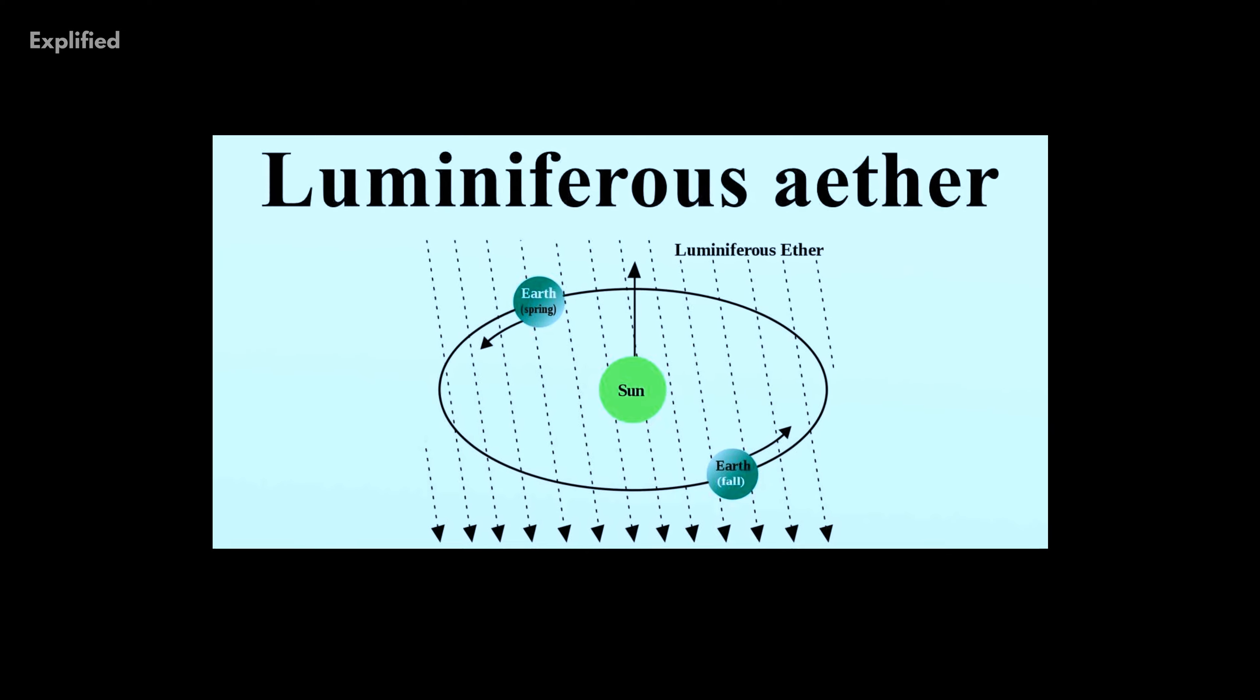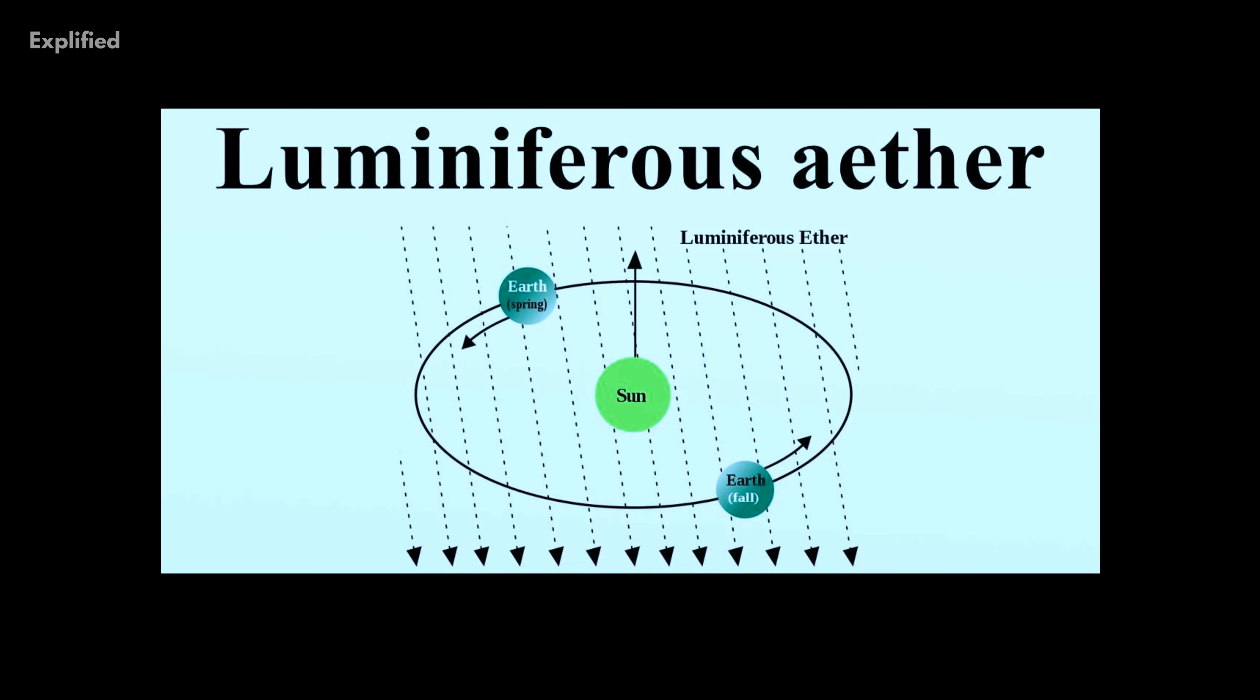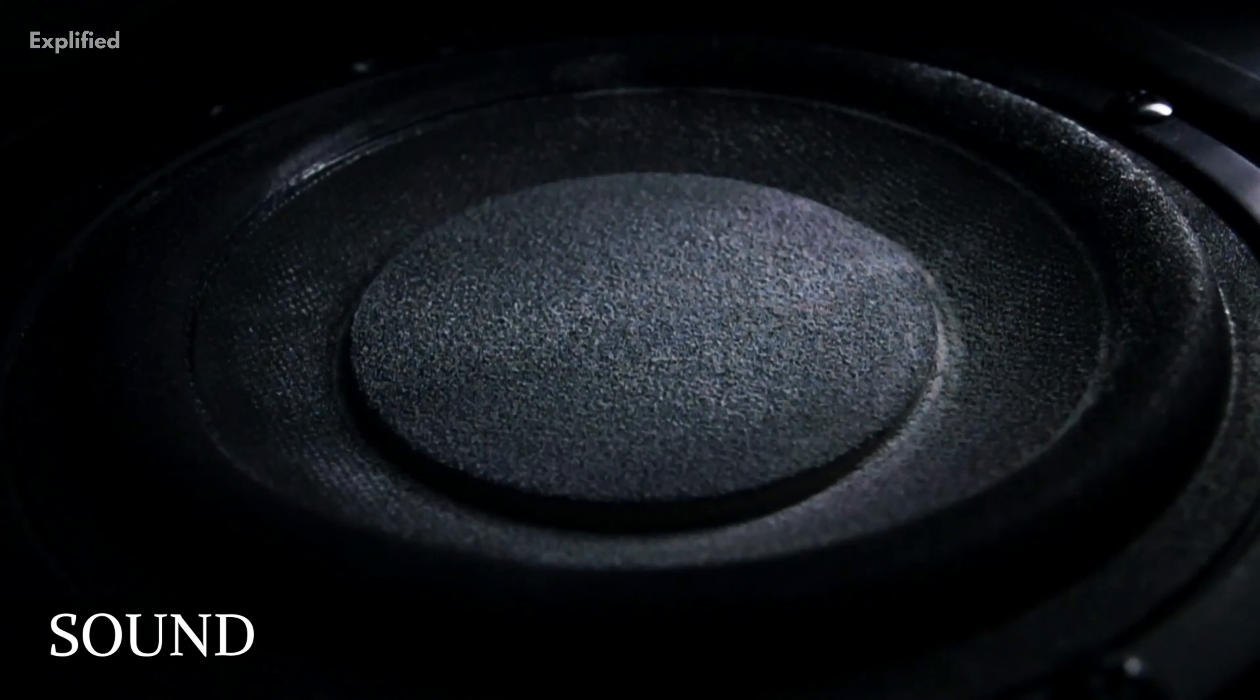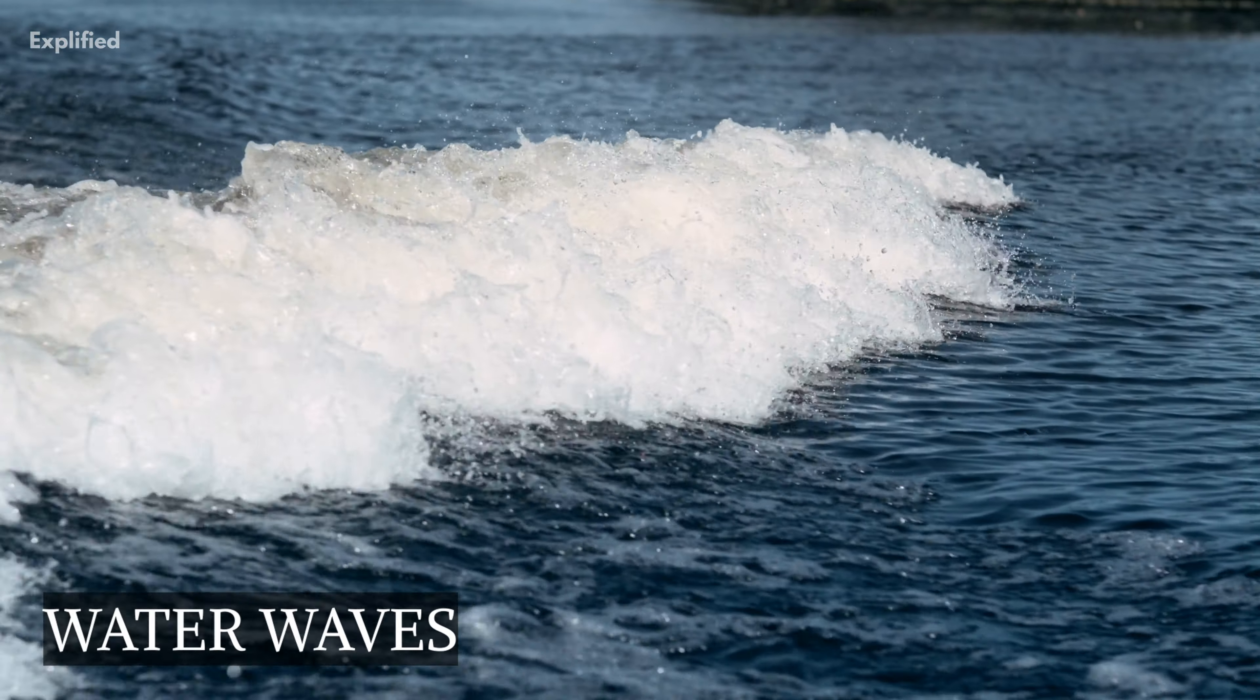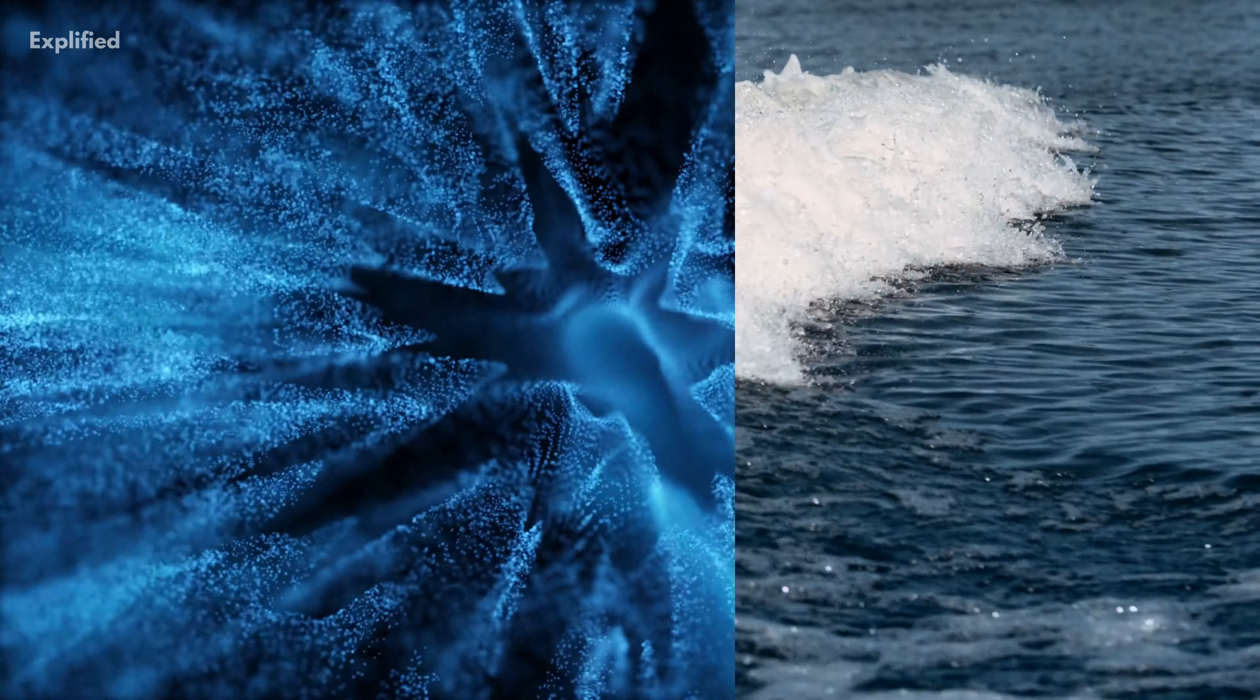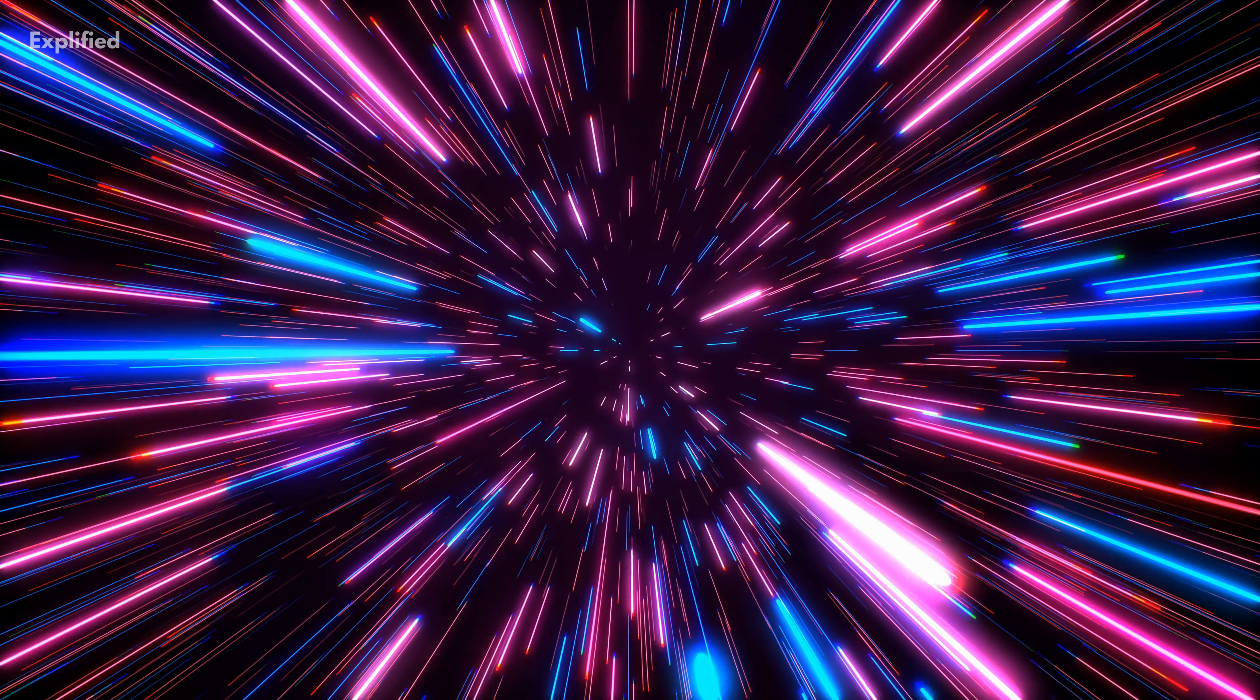Waves like sound in the air or water waves in water require a medium to exist. However, if the ether exists, the apparent speed of light must fluctuate when the earth passes through it.